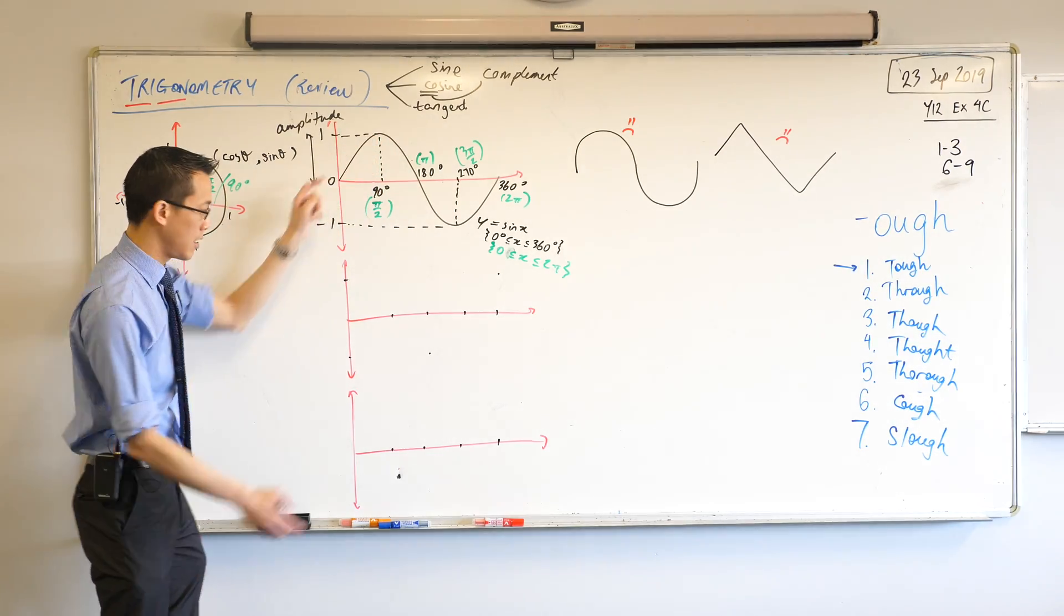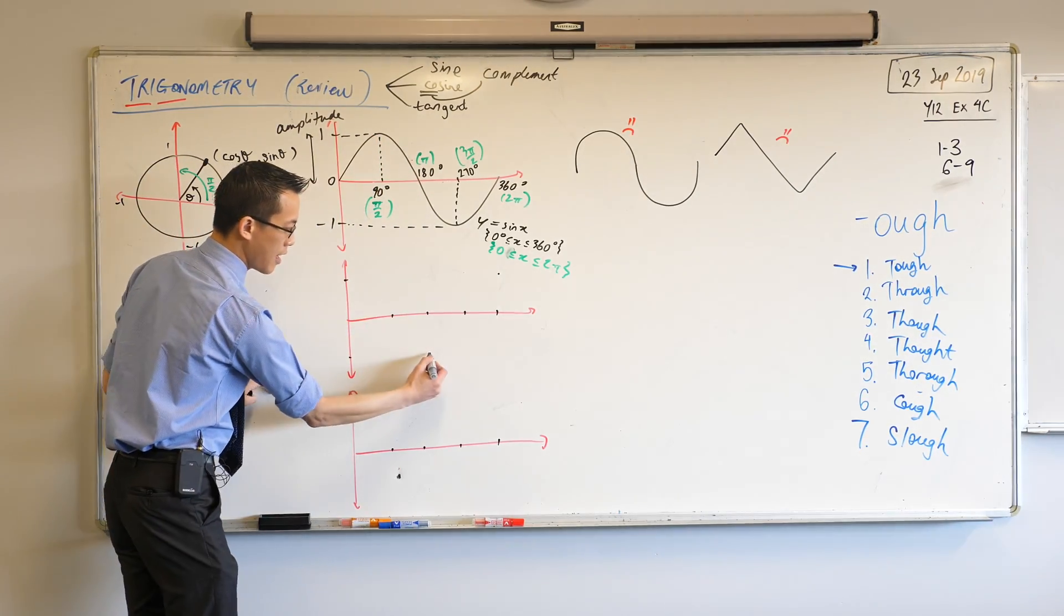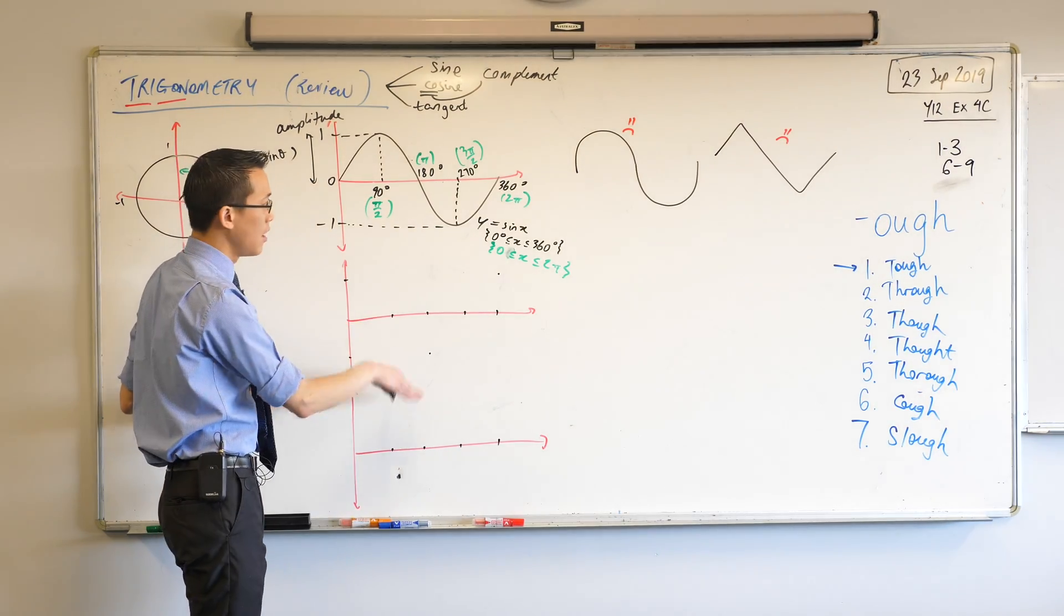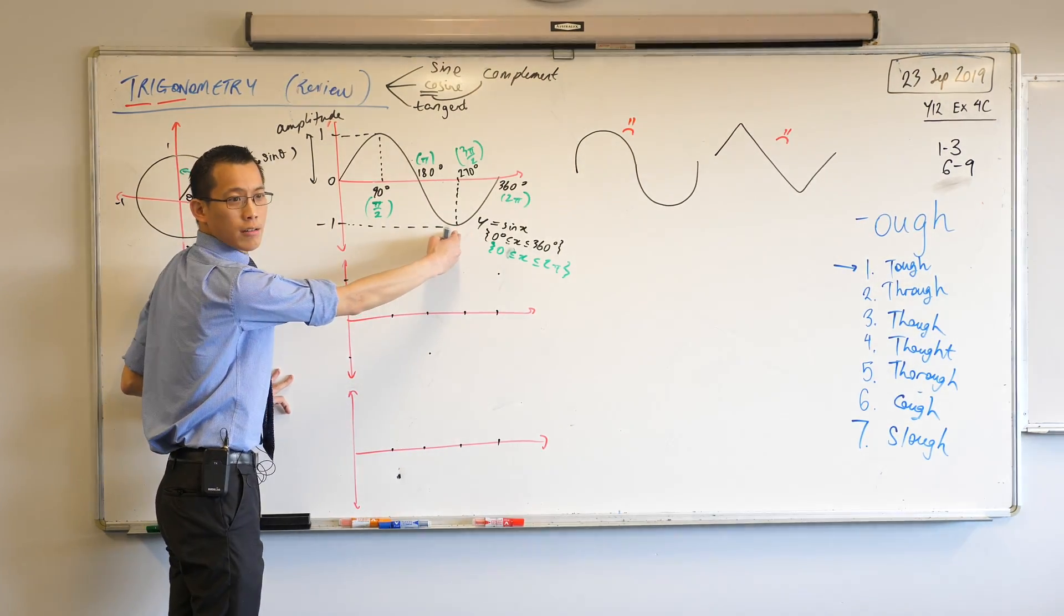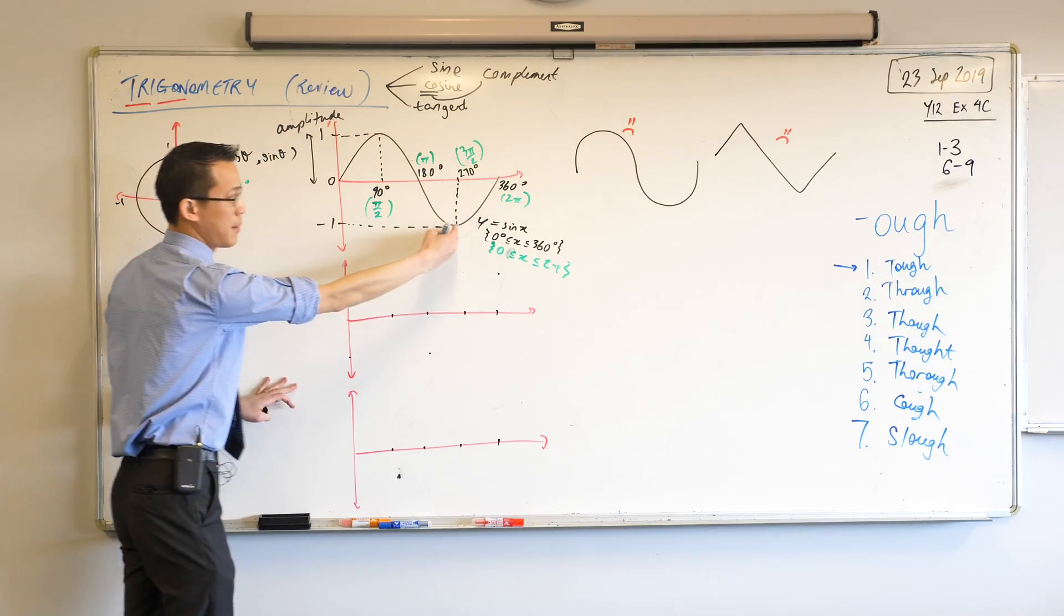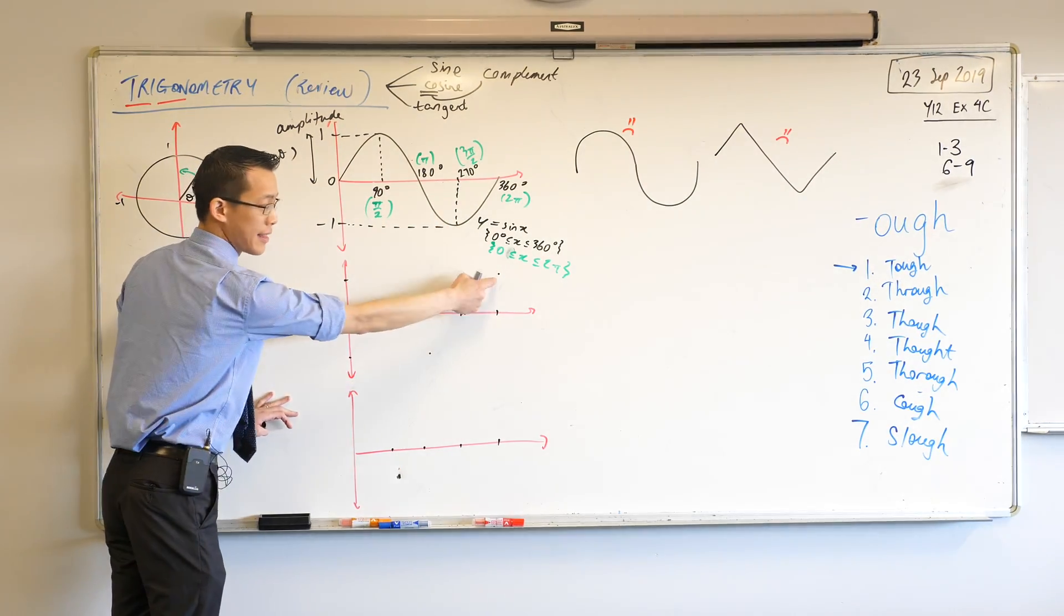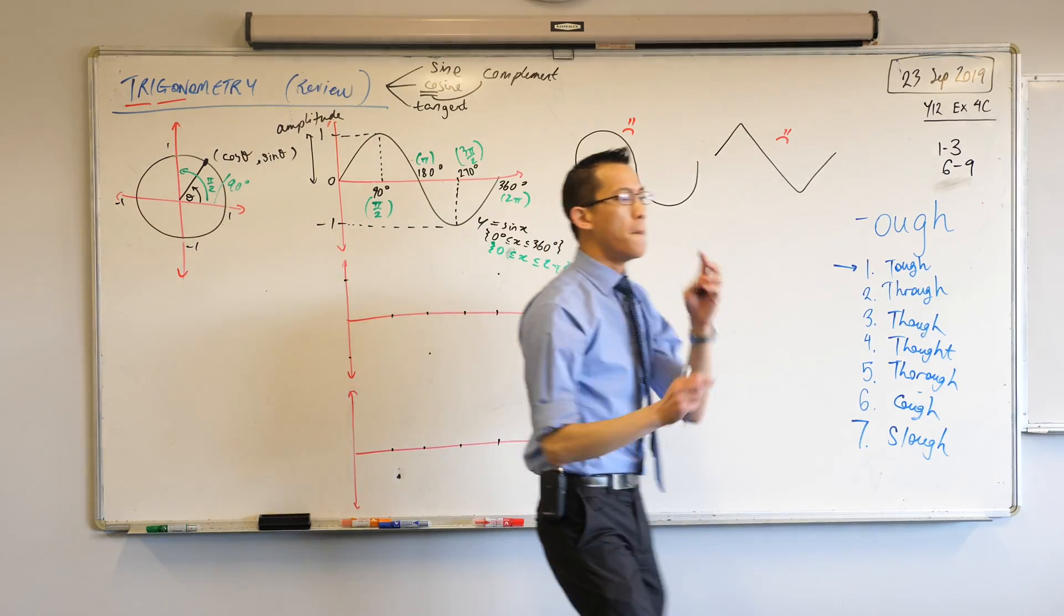Instead of starting here, I start 90 degrees forward. I'm starting up here. That's why I put a mark in there. And I'm going to go down, and then I'm going to reach this bottom part, I guess you could call it the bottom of the valley. I'm going to reach it earlier than I reached it before. Instead of 270, I'm going to meet it 90 degrees earlier at 180. That's why my spot is there, and that's why this spot is here.